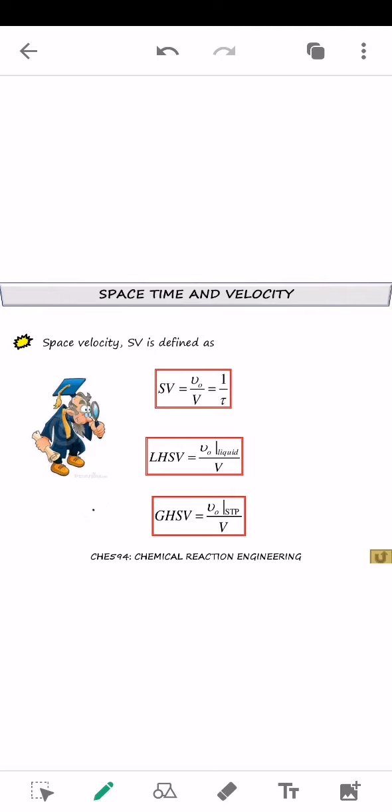So we are going to have a look at different definition of space velocity. The abbreviation is Sv. So the basic one Sv is volumetric rate divided by volume of reactor which is 1 over tau because just now we know that space-time or tau is equal to volume of reactor divided by volumetric. So the reciprocal of this would be the 1 over tau.